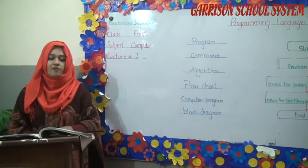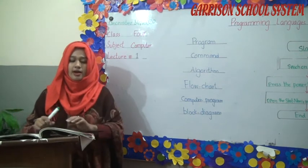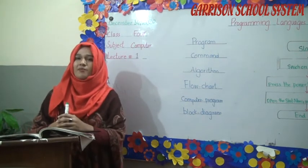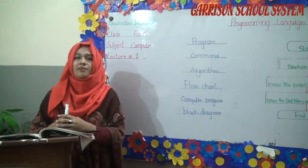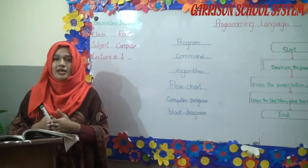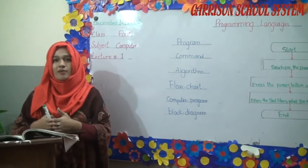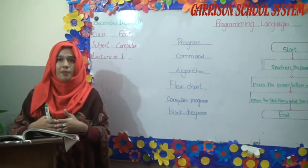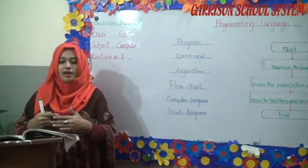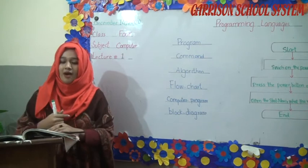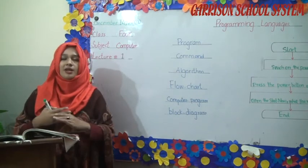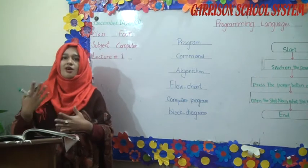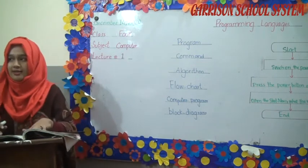Iske baad aapke book mein page number 55 mein given hai: Write an algorithm and draw a flowchart showing the correct way to shut down the computer. The steps are: Click the start button on the taskbar, wait for the computer to show the shutdown options — you can select: switch off the computer, switch off the system unit, or switch off the main power supply. Following these instructions, you have to write the algorithm and draw the flowchart.